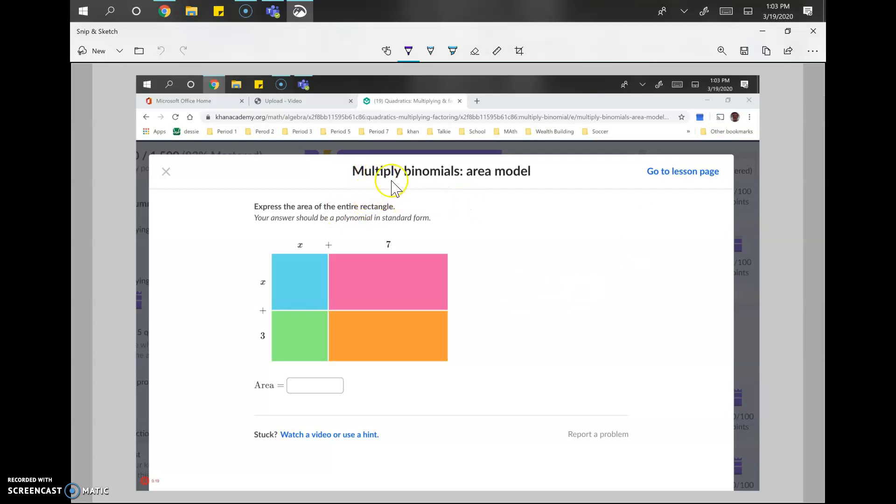Today's video is going to cover multiply binomials area model. And you can see here a binomial is an important word, means two, like bicycle. So bi is two, so we've got two things times two things, which means we're going to have four boxes and you can see those four boxes right here.